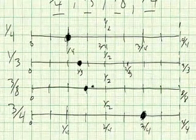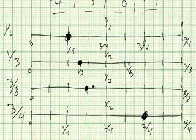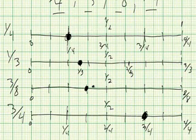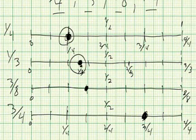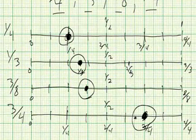So now we can see, just by looking at this picture that we made, how to order these fractions. They go in the order: one-fourth, one-third, three-eighths, three-fourths.